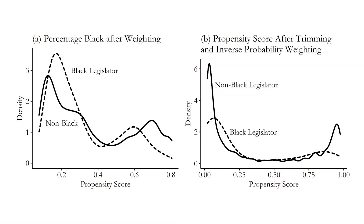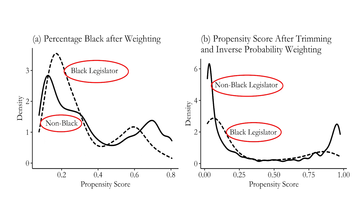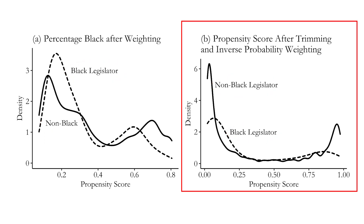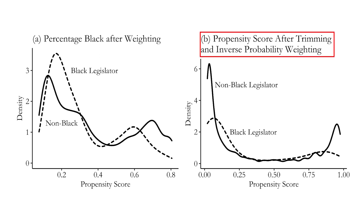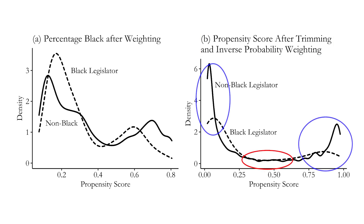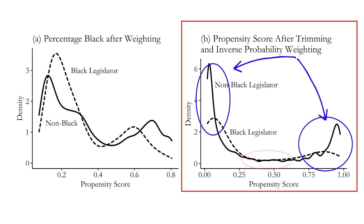Looking at the distribution of an entire matching variable, or perhaps the propensity score, is a pretty good idea after doing your matching to see how well things line up. For the Brookman study, we see how the distribution of percentage Black in the area looks after matching and weighting — that looks pretty decent. Over on the right, we see the propensity score distribution after matching. Since we're literally weighting based on the propensity score, we'd really want those to be close. We do see some similarities, but also quite a lot of differences — more non-Black legislators with really low and really high propensity scores — which might be a little concerning.